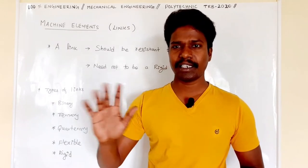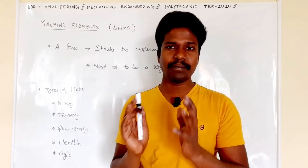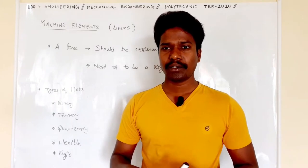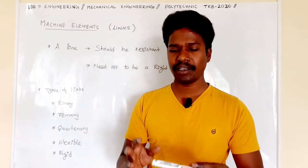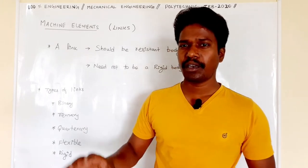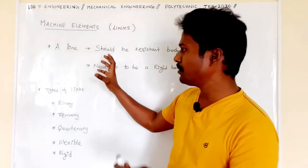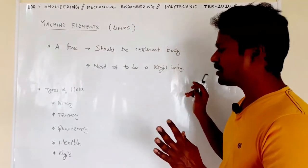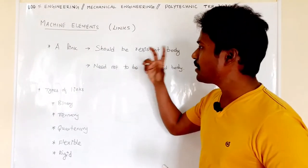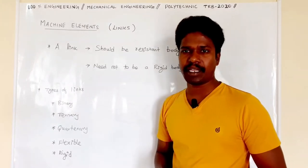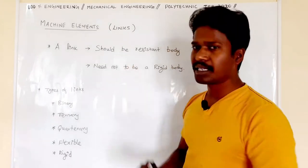That is a resisting body. Already we know what a rigid body is, okay? So a rigid body is nothing but it does not undergo deformation. For a link, it doesn't necessarily have to be a rigid body. It can be a resisting body.